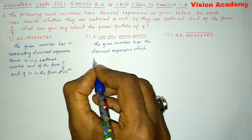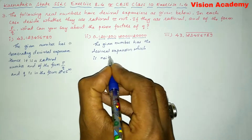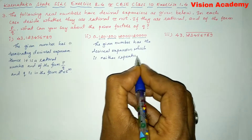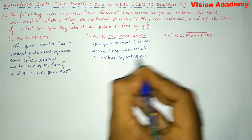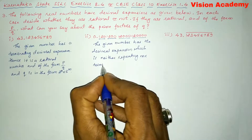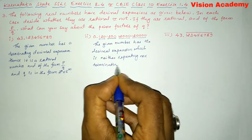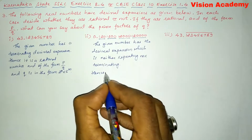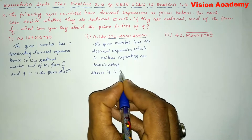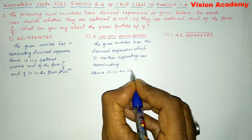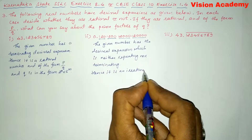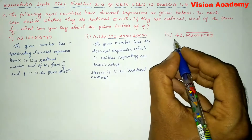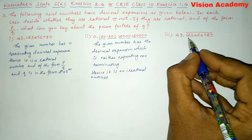The decimal expansion is neither repeating nor terminating. Hence it is an irrational number.